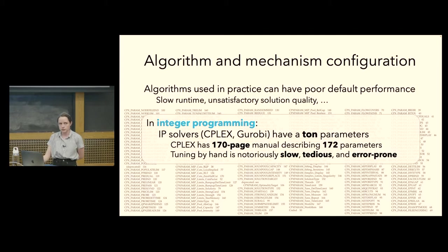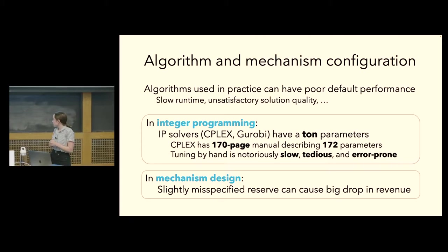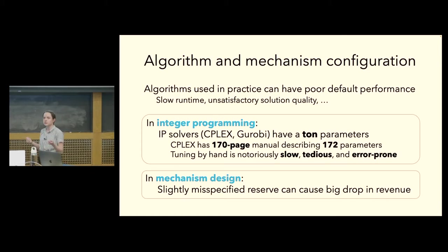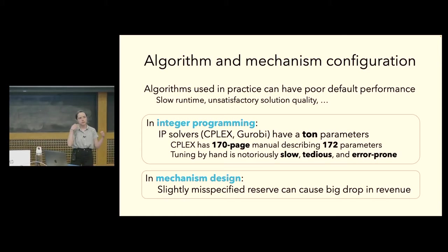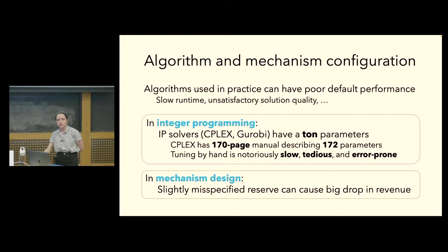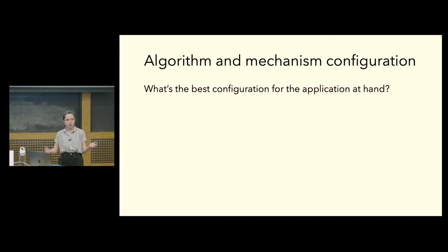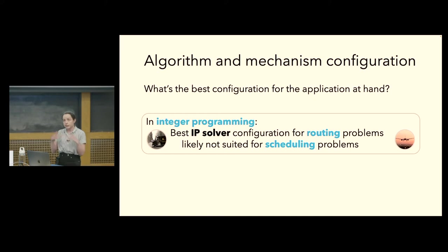C-Plex, for example, comes with a 170-page manual describing 172 different tunable parameters. But with a deft configuration of these parameters, these algorithms can be used to solve very computationally challenging problems. The same phenomenon arises in mechanism design as well — you can think of a mechanism as a special type of algorithm where the input is a set of bids and the output is an allocation along with payments. A slightly misspecified parameter like a price or a reserve can cause a really big drop in revenue.